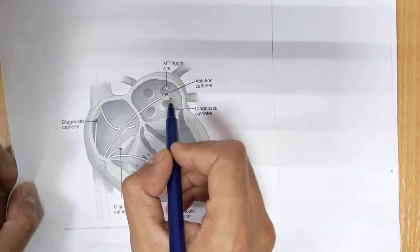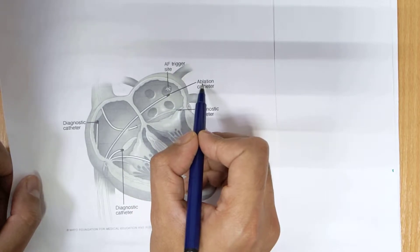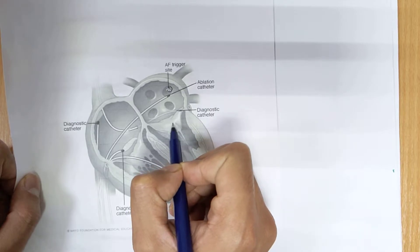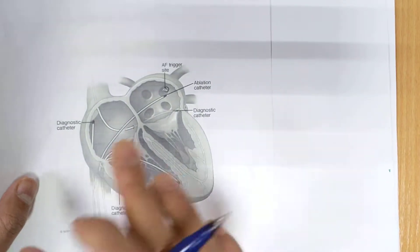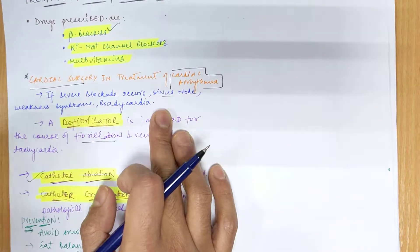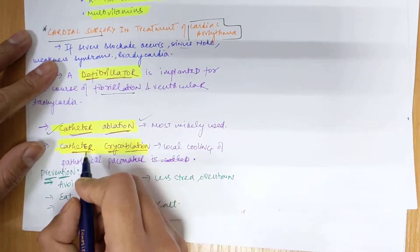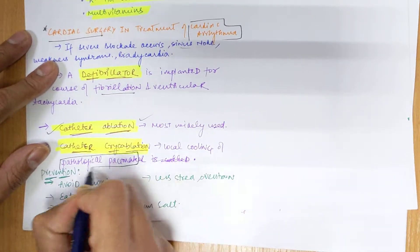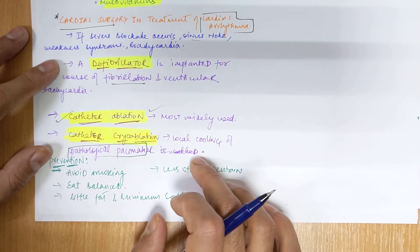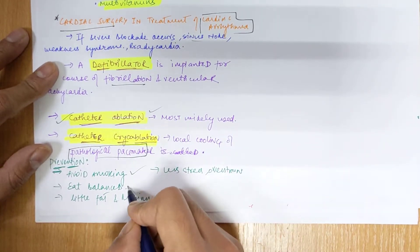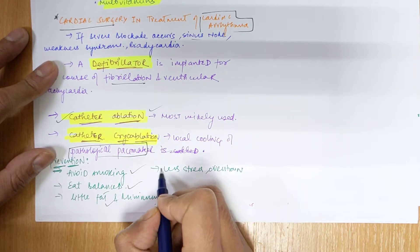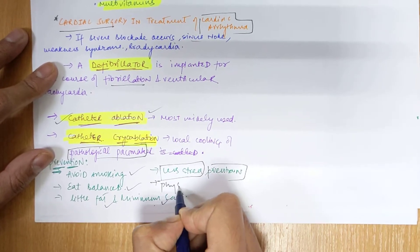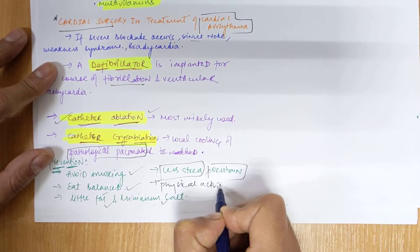As you can see in this diagram, there is a trigger site where ablation catheter is done, along with a diagnostic catheter inserted into your heart, and that area is damaged. That is the most widely used method. There is also catheter cryoablation, which involves local cooling of your pathological pacemaker. To prevent arrhythmias, you should avoid smoking, eat a balanced diet with little fat and minimum salt, manage stress, and do physical activity. That was arrhythmias — thank you.